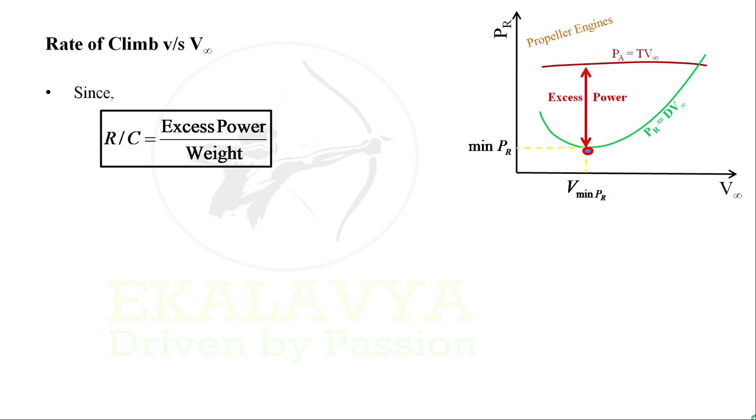For a propeller engine, as power available is almost constant with velocity V infinity, maximum excess power is obtained when power required is minimum. When power available curve and power required curve intersect, power available equals maximum power required and excess power will be zero at that point. It is the point where we have maximum velocity. After that point, power required becomes greater than power available and flight won't be possible.